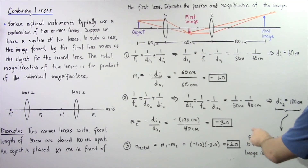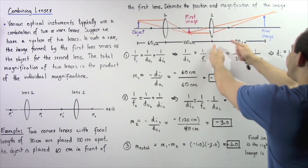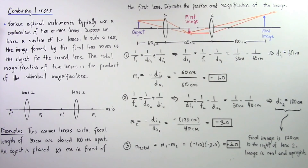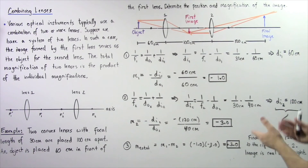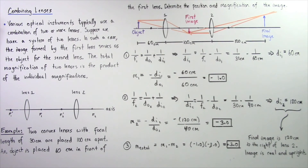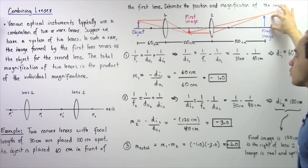The final image is found 120 centimeters to the right of lens number two. Because our rays of light actually pass through the final image, the image is real. And notice that our final image is upright.